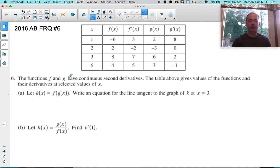2016 AB free response number six. We have two functions F and G, their derivative values are given for select values of X. They tell you in an interesting way that F and G have continuous second derivatives.